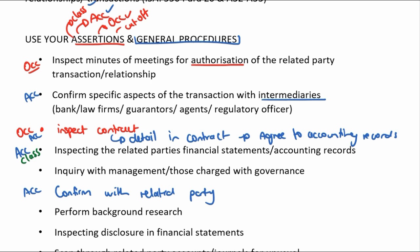Agreeing the date — which falls under cutoff — means the date details in the contract should be agreed to the accounting records.